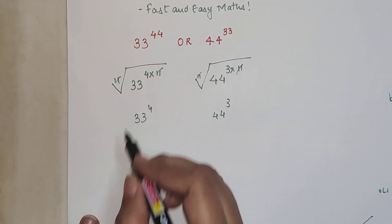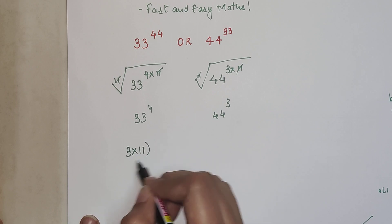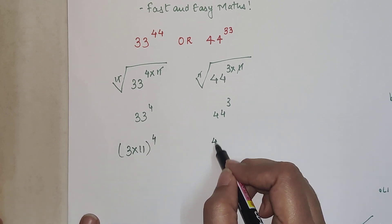Now this 33 can be written as 3 times 11, the whole raised to 4. Similarly, this can be written as 4 times 11, the whole raised to 3.